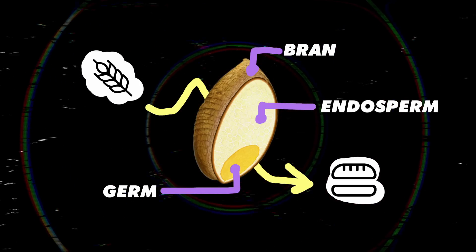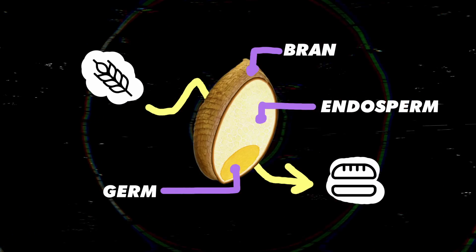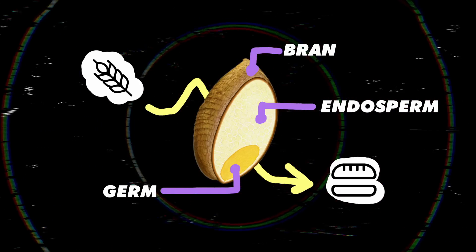And then we have the endosperm, which is the fun part. It's starch. It provides the energy. In this case, we can loosely translate energy to sugar. Sugar is fuel to make energy.